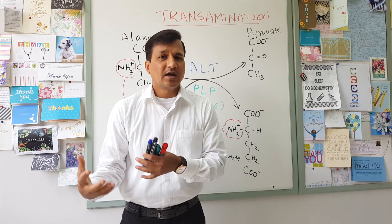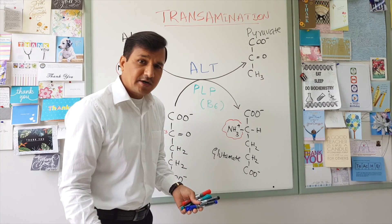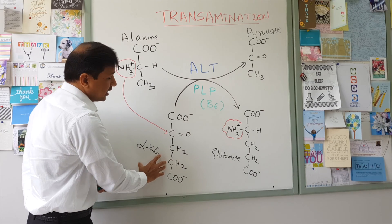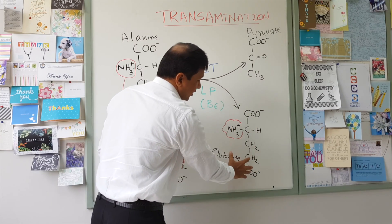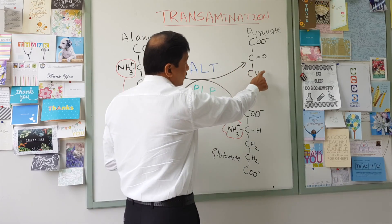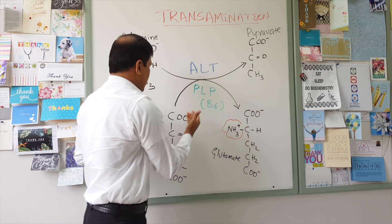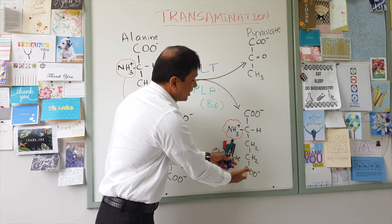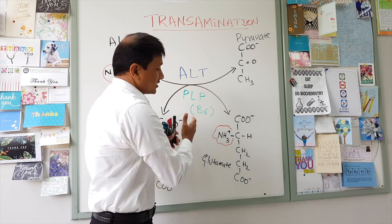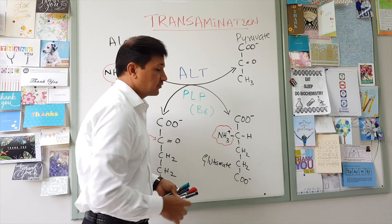Alanine transaminase is considered more liver-specific than other tissues, though it is found in other tissues too. Just like aspartate transaminase, alanine transaminase takes the amino group from alanine and puts it onto alpha ketoglutarate. Alpha ketoglutarate, after receiving that amino group, is converted to glutamate. Alanine, after losing its amino group, is converted into pyruvate, which is a keto acid. Alanine transaminase also requires pyridoxal phosphate as a coenzyme.